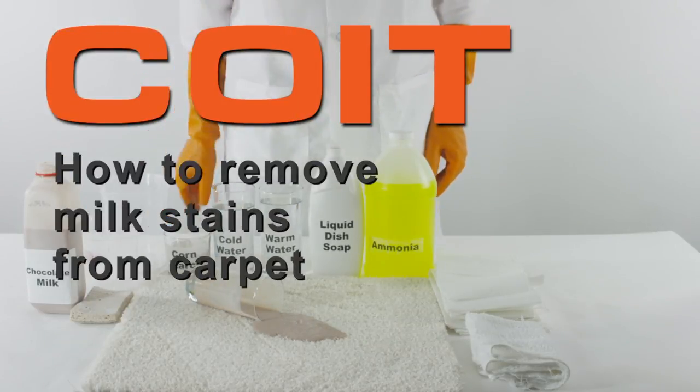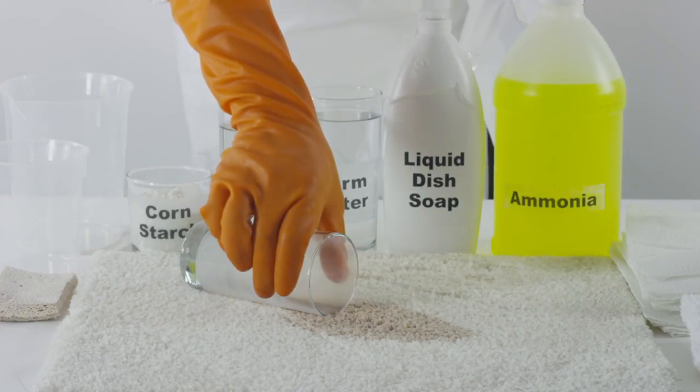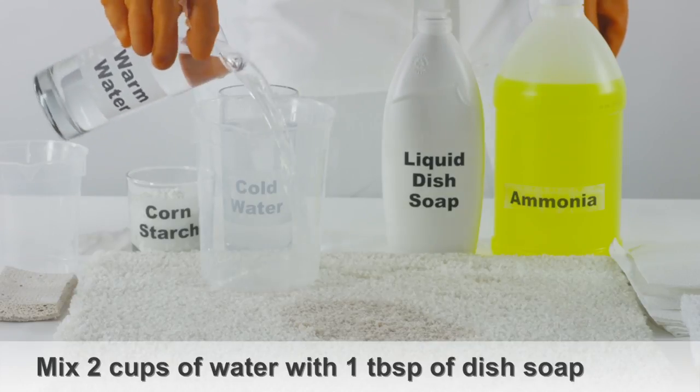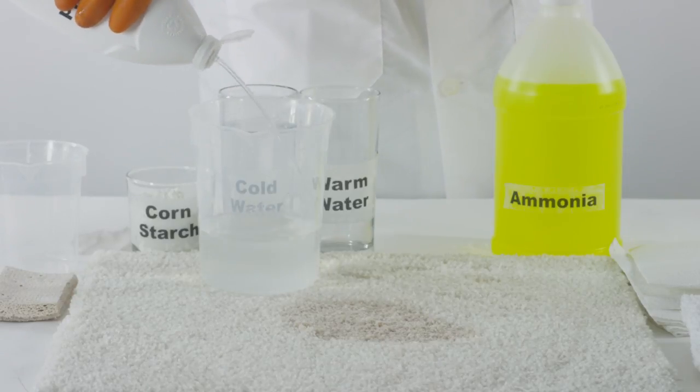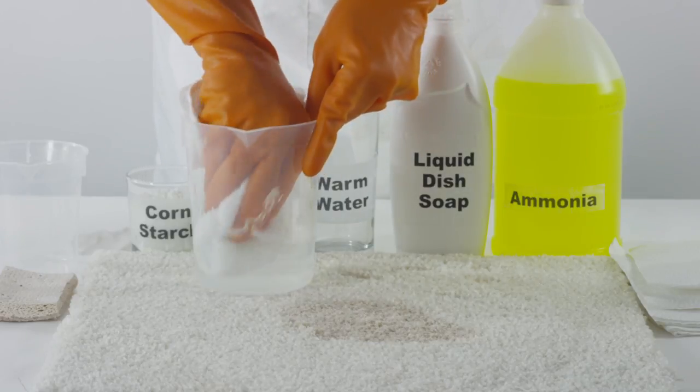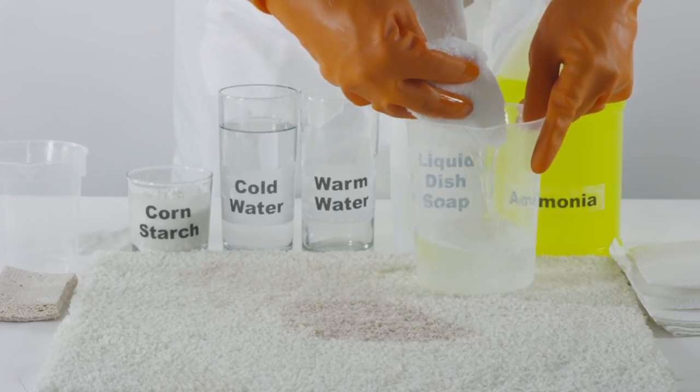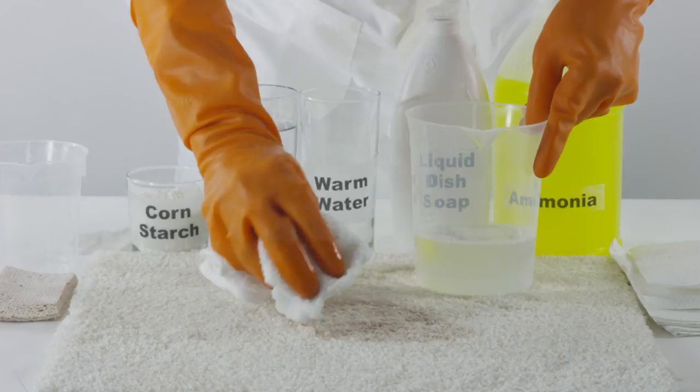How to clean milk out of carpet. Mix two cups of warm water with one tablespoon of liquid hand dishwashing detergent. Take a damp white cloth and moisten it with this solution. Use the cloth to soak up any remaining milk from the affected area of the carpet.